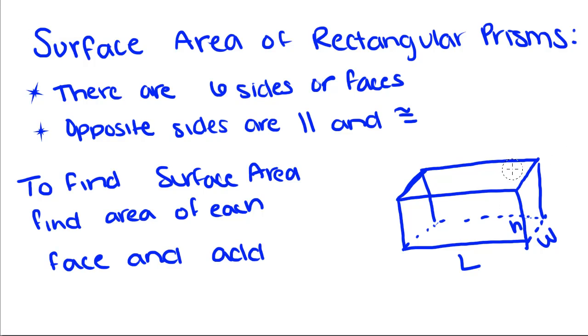So opposite sides or faces are parallel and congruent. So this face right here, which is the top of the prism, like the top of a box, is going to be congruent to the bottom of the prism or the bottom of the box. This right side right here is going to be congruent to this left side right here. And this front of the box is congruent to this back of the box, which you can't really see because I can't show you the back of the box on paper.